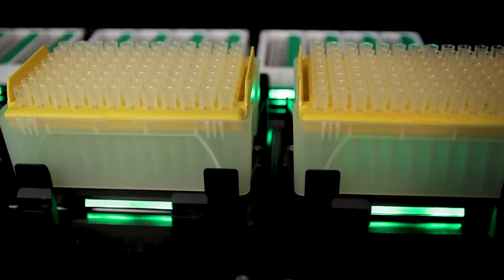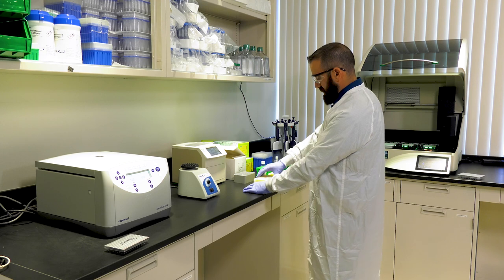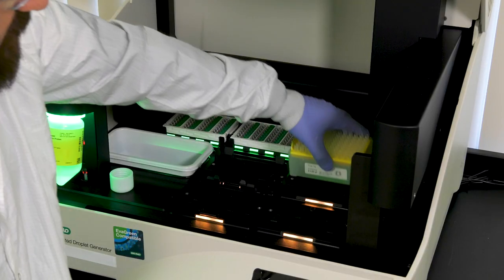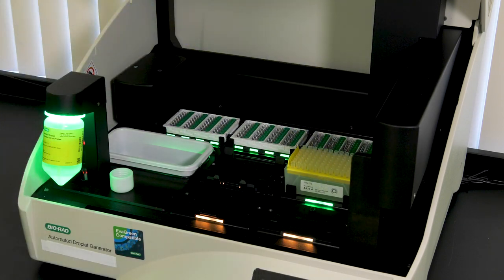Next, ensure that you are using DD-PCR tips that are specifically made for the automated droplet generator. Remove the cover of each tip box and place the tip box on the instrument. Simply load the tip boxes where the screen tells you to.